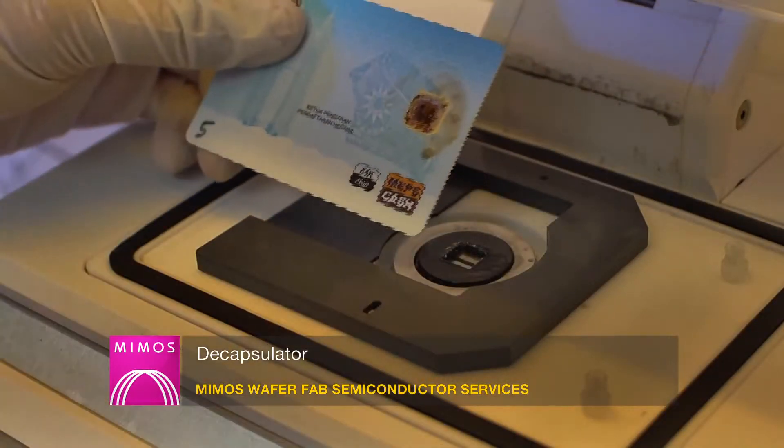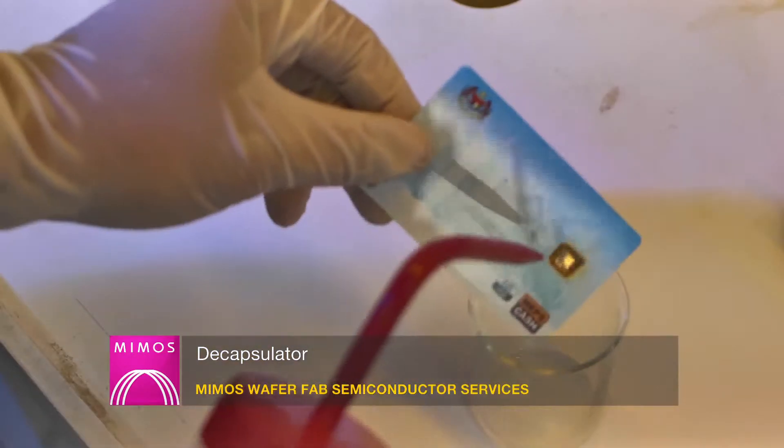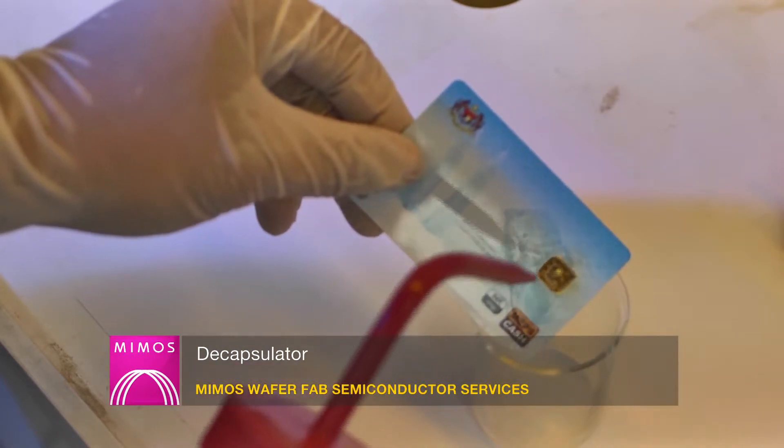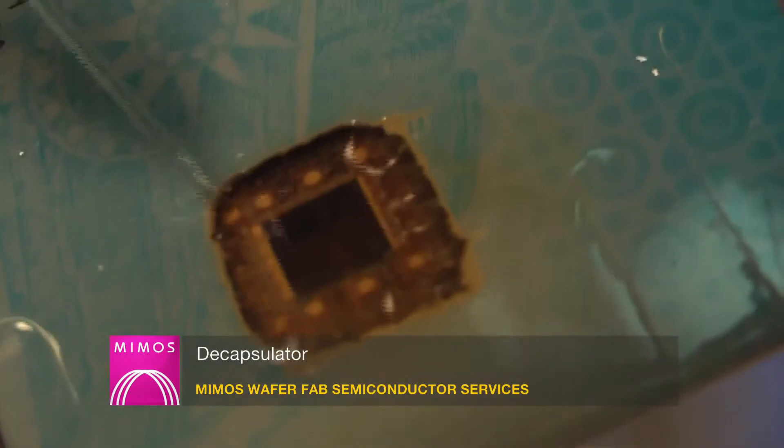Decapsulator system is used to remove encapsulant while preserving the integrity of the die, bond pad, bond wires and lead frame interconnects.